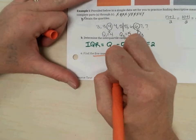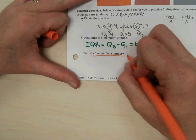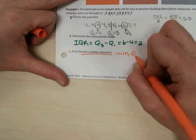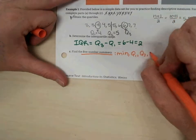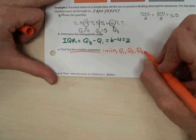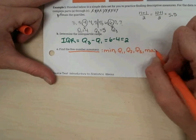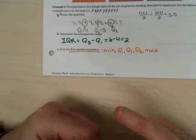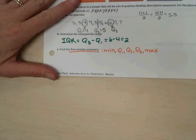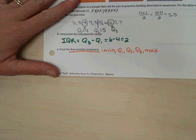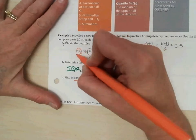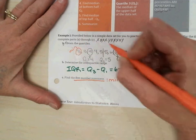The five-number summary is made up of the minimum of a data set, Q1, Q2, Q3, and the max of a data set. So in my data set up here, the minimum is three and the max is seven.